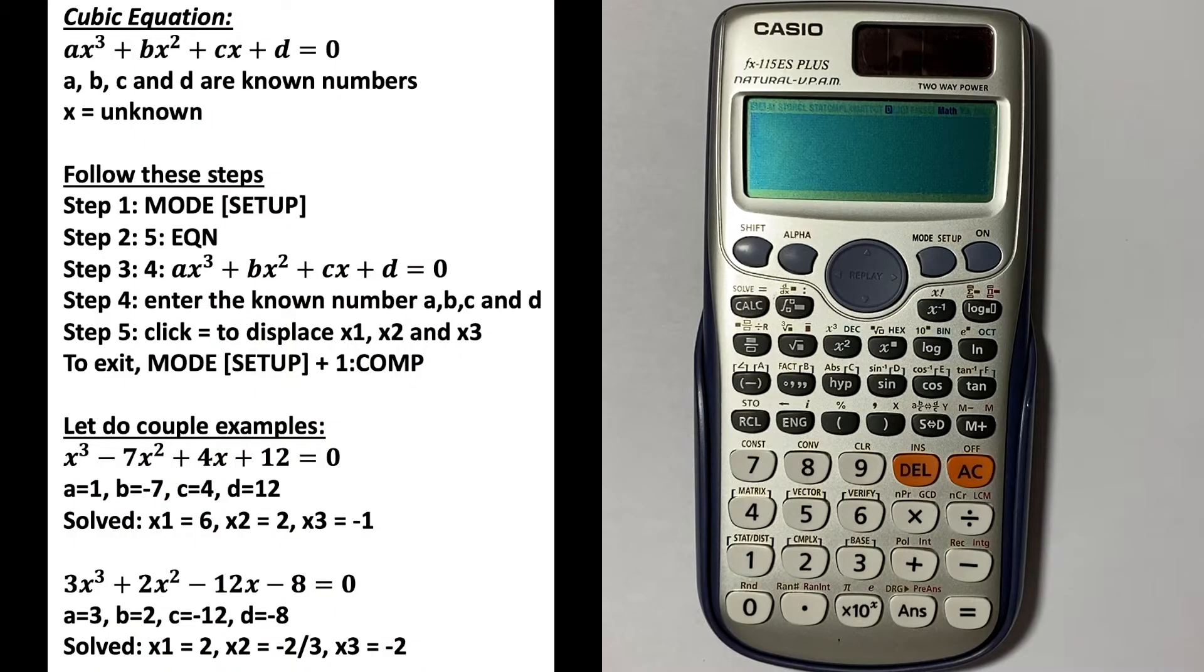A cubic equation has the formula ax³ + bx² + cx + d = 0, where a, b, c, and d are known numbers and x is unknown.